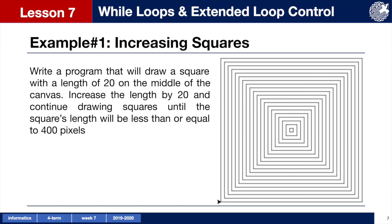Let's look at how we can use loops in our program. In our first example, we want the turtle to draw squares starting at length 20 where each square's length is 20 pixels larger than the one before. All squares should be centered. We want the turtle to stop drawing squares once the last square's length is less than or equal to 400 pixels.